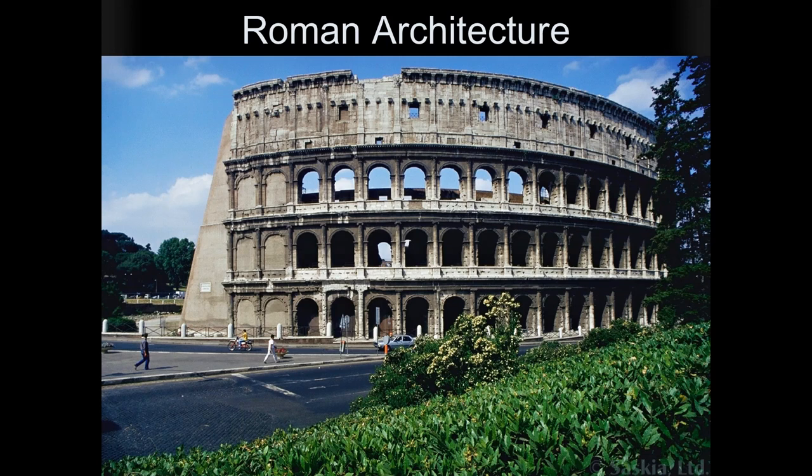We'll also talk about painting. I didn't talk about Greek painting, and part of the reason why is it doesn't really exist so much. The few paintings we have that are most likely influenced by Greek styles are Roman. So when we talk about Roman painting in the next lecture, that will enable us to bring in Greek painting as well. As for sculpture, the styles are too similar to Greek to make it worth going over Roman sculpture separately.